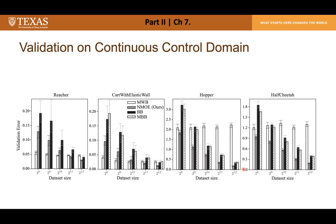I evaluated the NMoE framework using various continuous control domains. I uniformly sampled training and test data sets, trained NMoE and baseline models, and measured root mean square error on the test set with training set sizes ranging from 2^8 to 2^12. The proposed method, shown in gray, successfully outperforms related baseline methods in terms of data efficiency, generalization to unseen data, and bias-variance tradeoffs. This work was published at L4DC 2020.